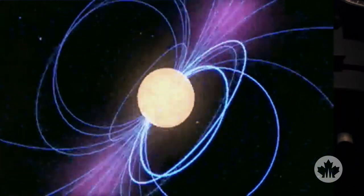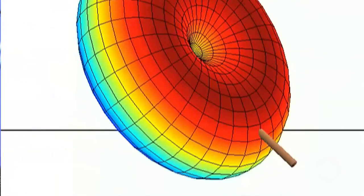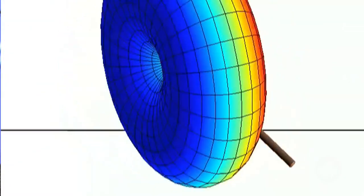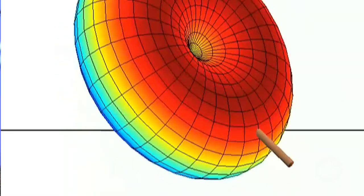You can also use pulsars to create the world's best time standard, and there's current research being done to try and do that. Currently the best time standards are controlled by atomic clocks at national laboratories, but it turns out many pulsars are extremely stable rotators, and it might be possible to create a time standard better than even the atomic clocks.